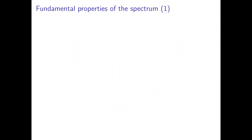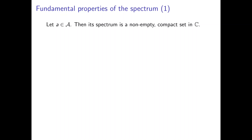Some fundamental properties of the spectrum that we need to know are the following. The first important one — maybe the most important one — is that if we take any element in any Banach Algebra, then the spectrum of this element A is a non-empty compact set in ℂ. What we have to prove is three things: that this spectrum is going to be closed, bounded, and non-empty. These are kind of easy to prove, except for the non-empty part — that's actually kind of tricky.